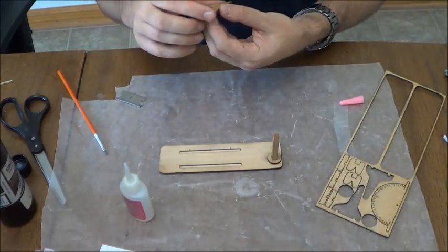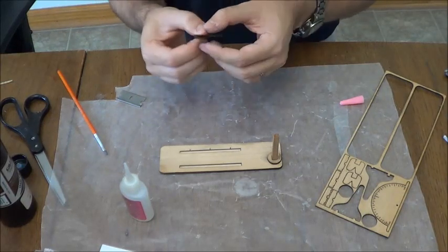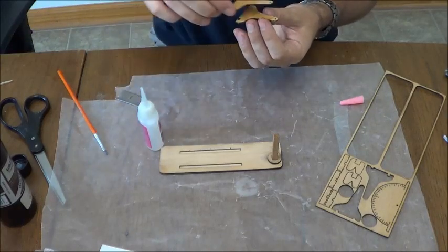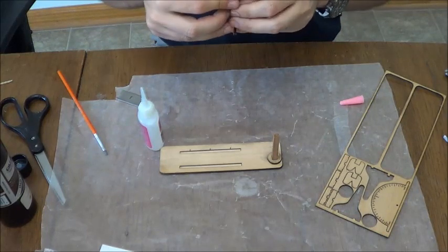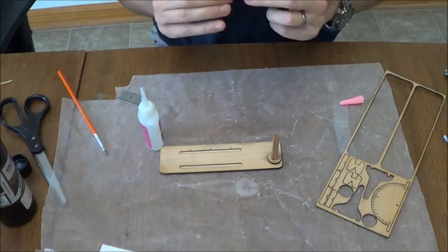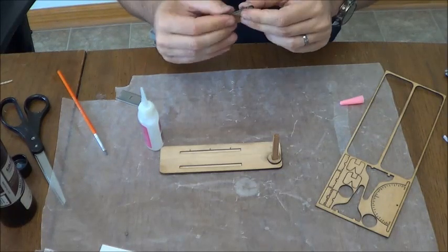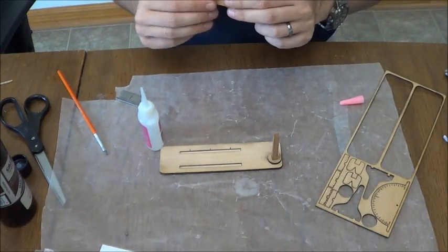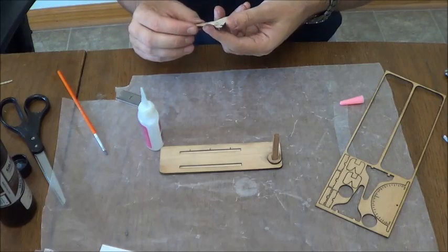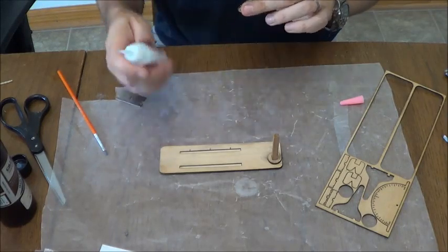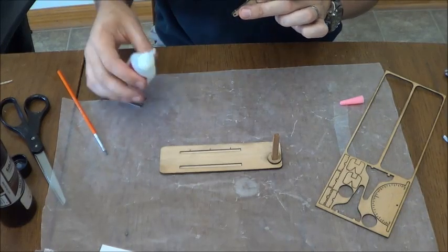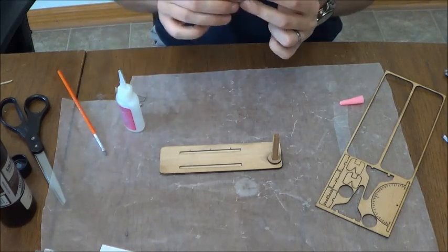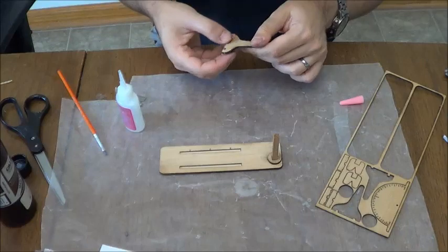These two pieces, we're just going to glue together so that they're perfectly straight across there. Nothing too complex on that. We'll mention I'm using thin CA to secure these. I do not actually recommend that you use that because it works too quickly. So, what you would prefer to use is medium CA. If you're a true woodworker, of course, you could go and get wood glue or something of that nature. There we go.